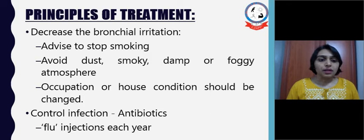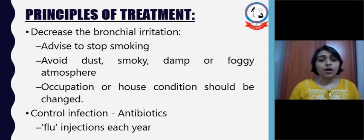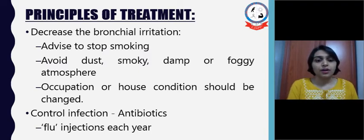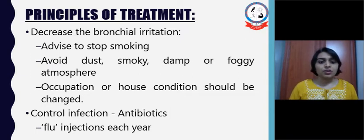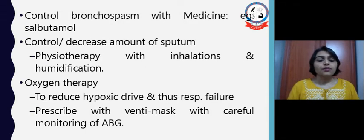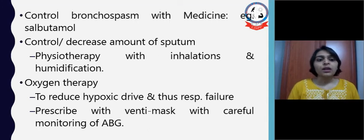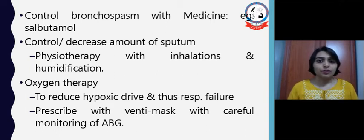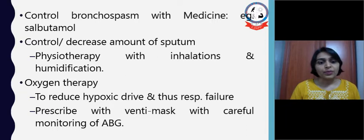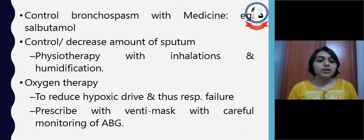We need to ask the patient to avoid dusty, smoky, damp, or foggy atmospheres. Occupation or house conditions should also be changed if required. Control of infection can be done with antibiotics, or flu injections each year can also be given. Further, control bronchospasm with medicines such as salbutamol and other bronchodilators. Control and decrease in amount of sputum can be done with physiotherapy, inhalation, and humidification. Oxygen therapy is given to reduce the hypoxic drive and thus respiratory failure, prescribed with 24% masks with careful monitoring of ABG.